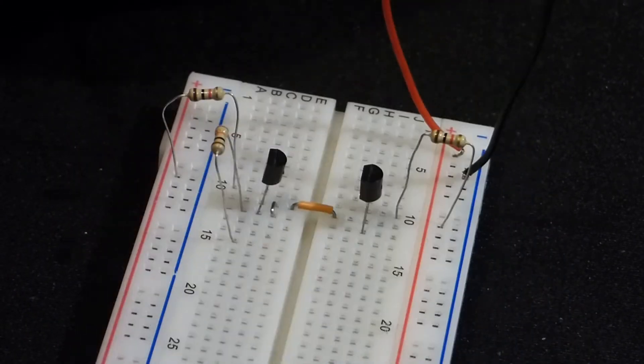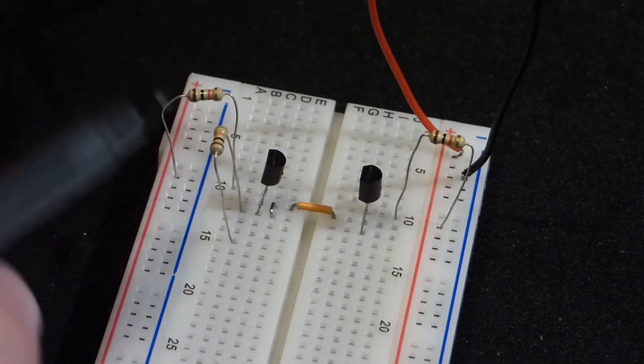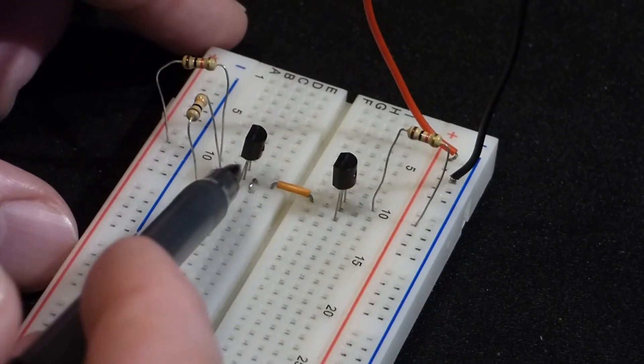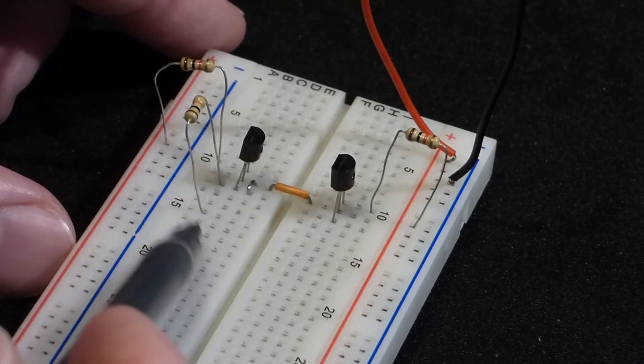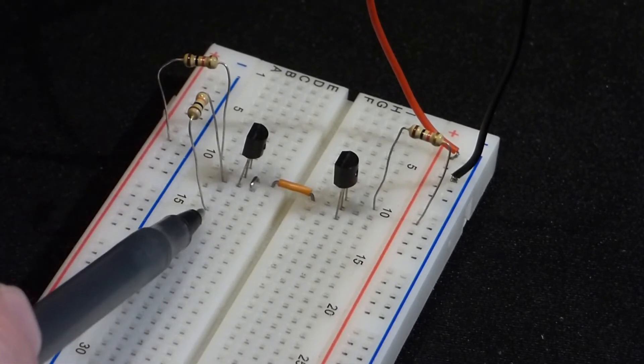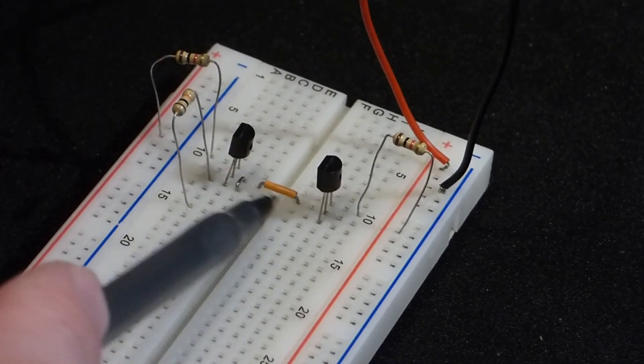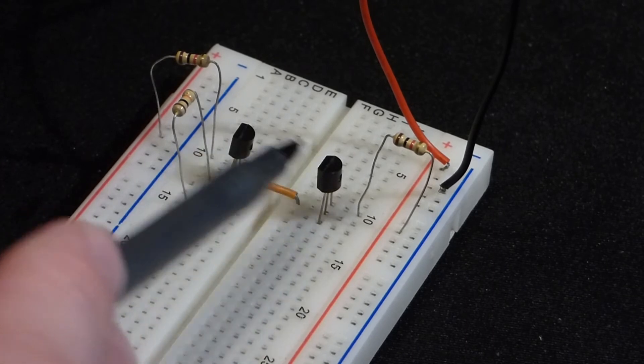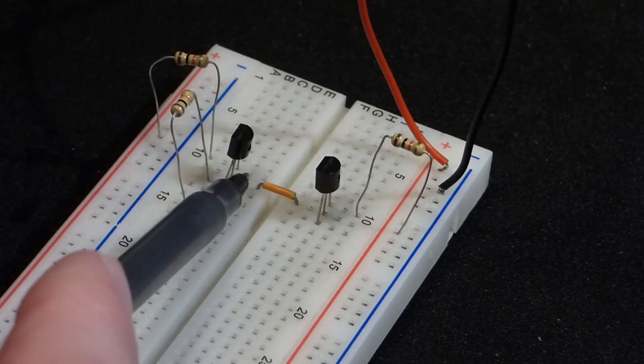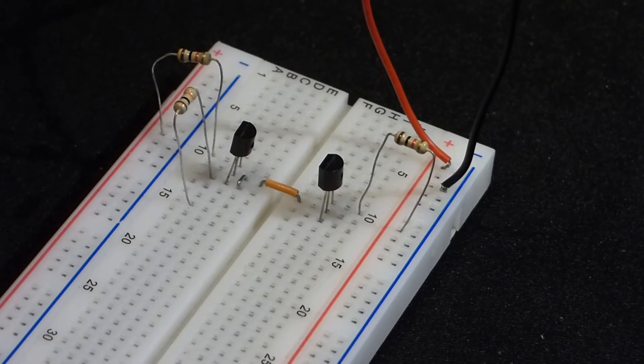At the emitter we have 1 kilo ohm resistors, and then right here we have a 10 kilo ohm resistor. The 10 kilo ohm resistor comes from the collector there. I have it here, we're going to move it to the ground rail, but we're going to take a current measurement coming up. The base of both PNP transistors are connected via this jumper, and then this jumper connects the base to the collector of this PNP transistor.